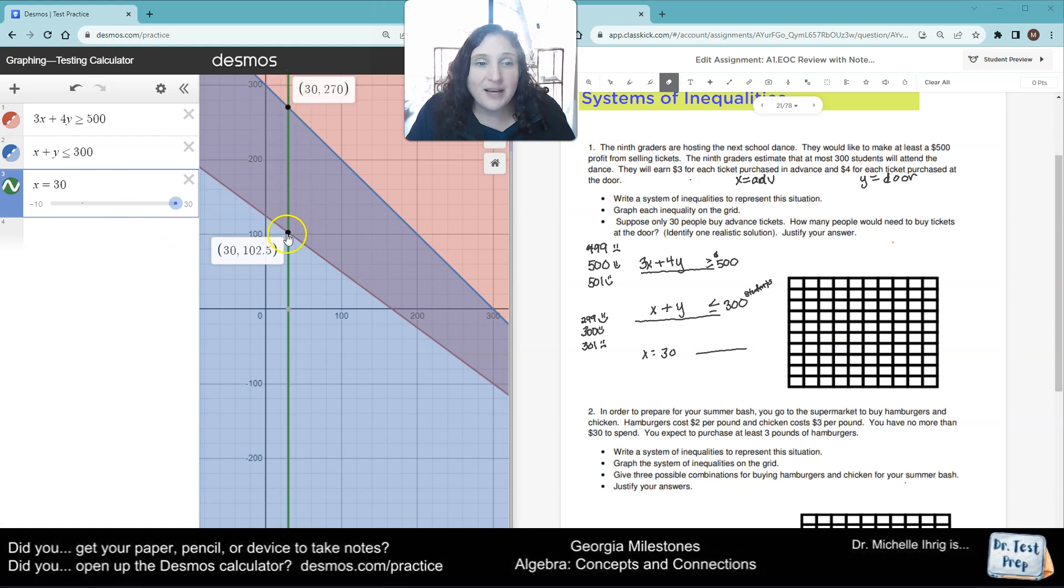So what would end up happening is notice this dot right here. We would have to have that many people buy it at the door. So we could have as few as 103 people and as many as 270 people.